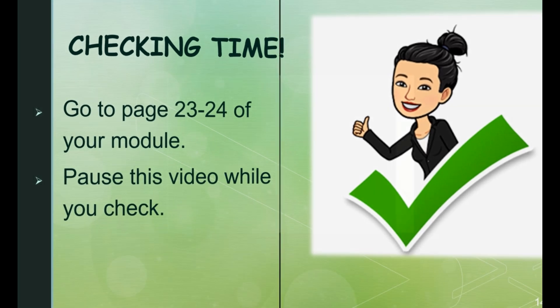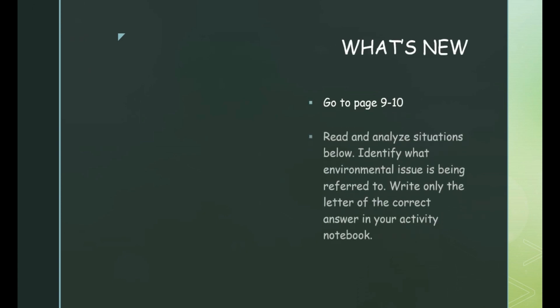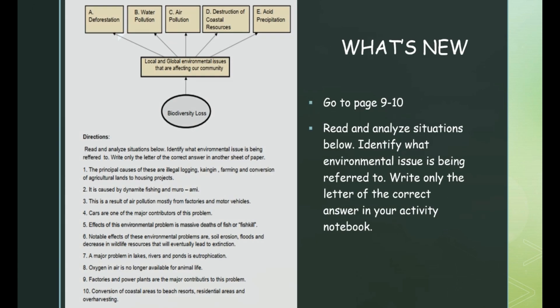Now let's have a challenge. Go to page 9 to 10 of your module. What's new? Read and analyze the situations below. Identify what environmental issue is being referred to. Write only the letter of the correct answer in your activity notebook. For number one, the principal causes of these are illegal logging, kaingin farming, and conversion of agricultural land to housing projects.